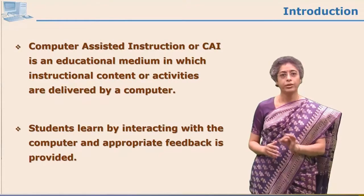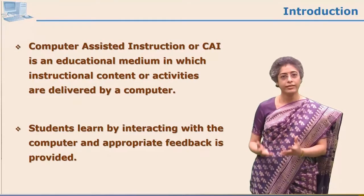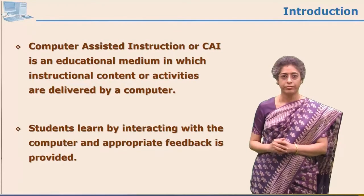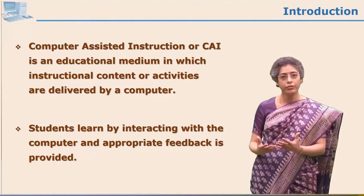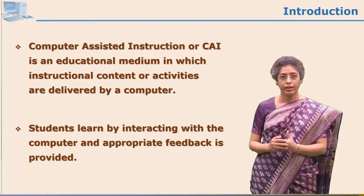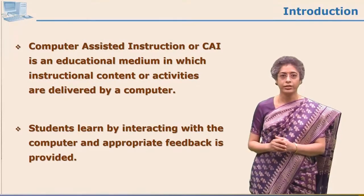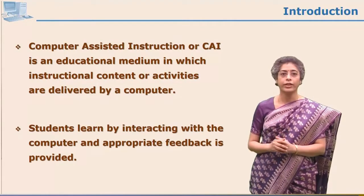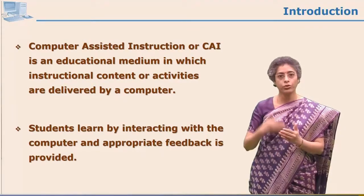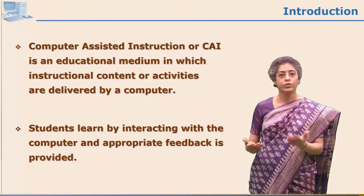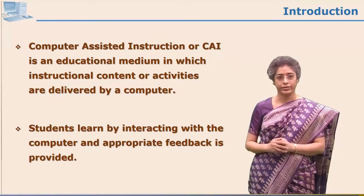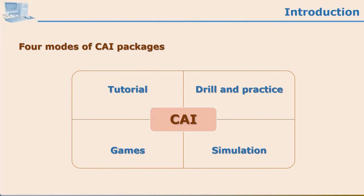What is CAI? Computer assisted instruction is a mode, or we can say it is a strategy, where the computer is the main medium. The material content is given through this particular medium and along with the content there are various activities which are also presented by the computer. Here students interact with those activities, that is with the computer. There are four modes of CAI and all these four modes decide how much the learner is interacting with the computer or with the CAI packages.